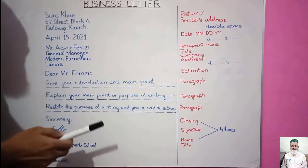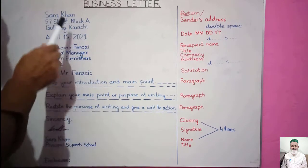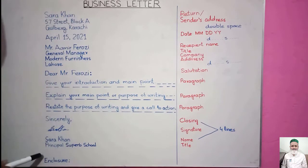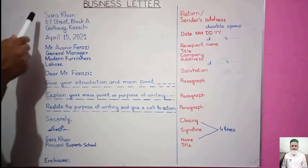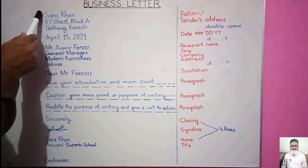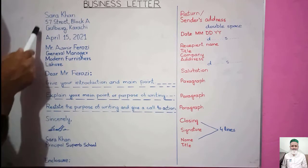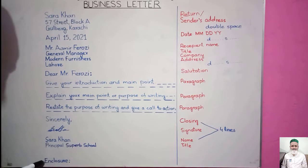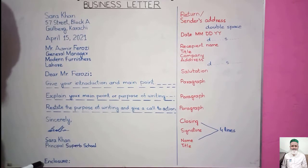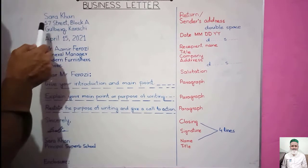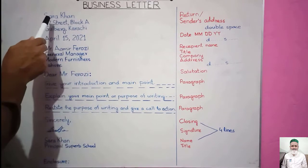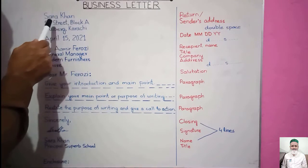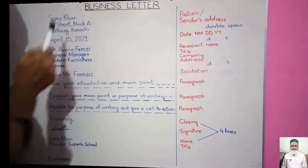In a business letter, generally all sections are left-justified. You can see here that all sections are left-justified in this business letter. Let's first look at the Return address, or Sender's address.